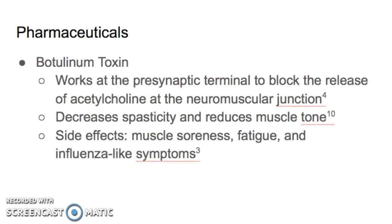Next we're going to talk about some of the pharmacological interventions patients with cerebral palsy often use, starting with botulinum toxin. Typically, botulinum toxin is used in conjunction with physical therapy treatments to act as a muscle relaxant for spastic forms of cerebral palsy, and it has been shown to improve gait outcome and general prognosis. It works at the presynaptic terminal to block the release of acetylcholine at the neuromuscular junction, preventing the nerve from innervating the muscle and causing it to contract. Side effects include muscle soreness, fatigue, influenza-like symptoms, pain, leg cramps, skin rashes, excessive weakness, and sometimes infection.